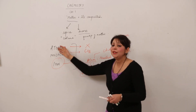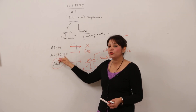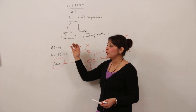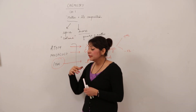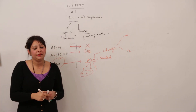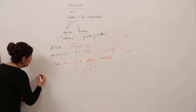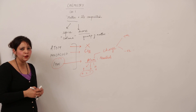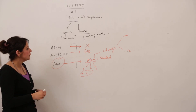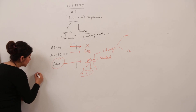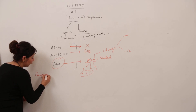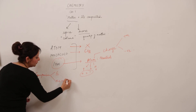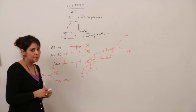Matter can be formed of any of these three: atoms, molecules, or ions — these are the three constituents of matter. Matter can be perceived by any of the physical senses like touch or smell. Matter comprises both living and non-living matter.